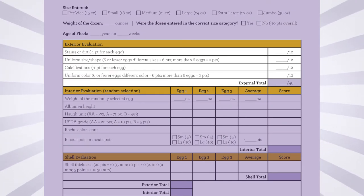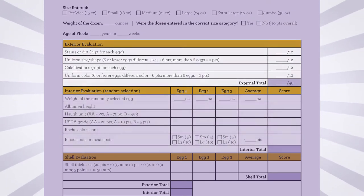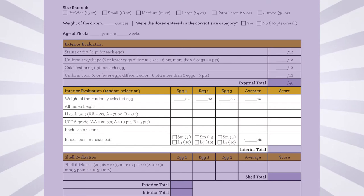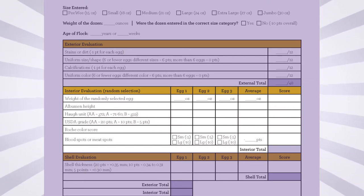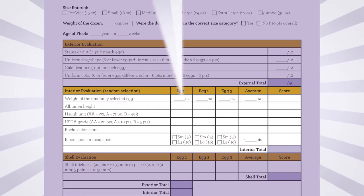The outside of the egg counts for fewer overall points than the interior. Let's review what you can do to ensure that your entry has good interior quality.